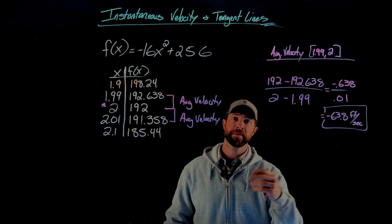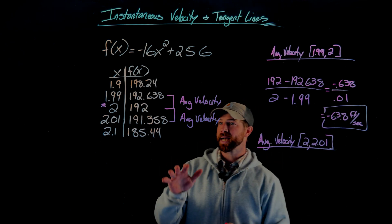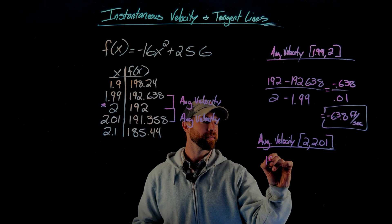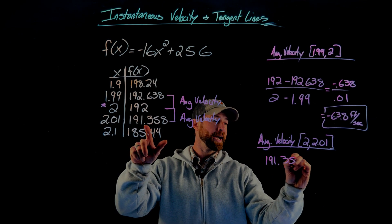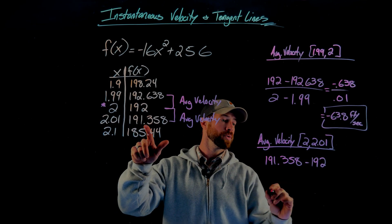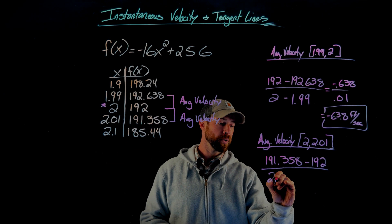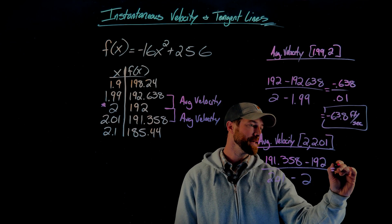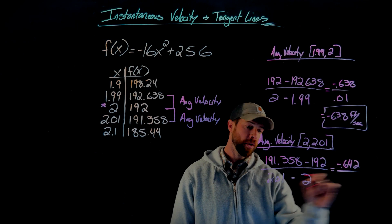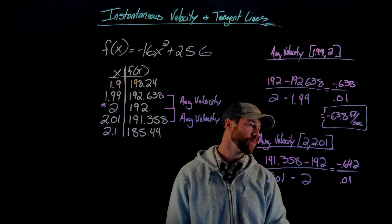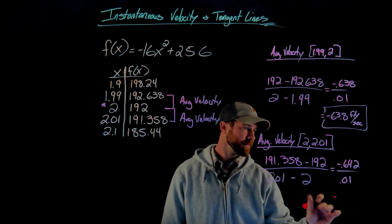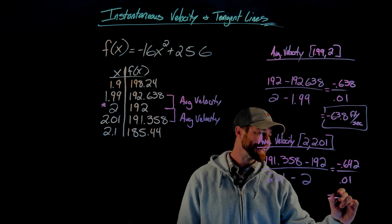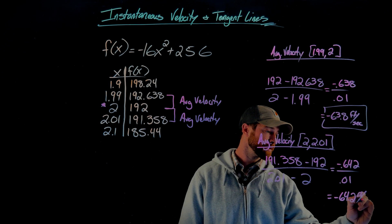Doing the exact same thing for the second interval between 2 and 2.01 seconds, I have a height of 191.358 minus 192 over 2.01 minus 2. I get a difference in height of negative 0.642 over a time interval of 0.01 seconds. This division gives us an average velocity of negative 64.2 feet per second.